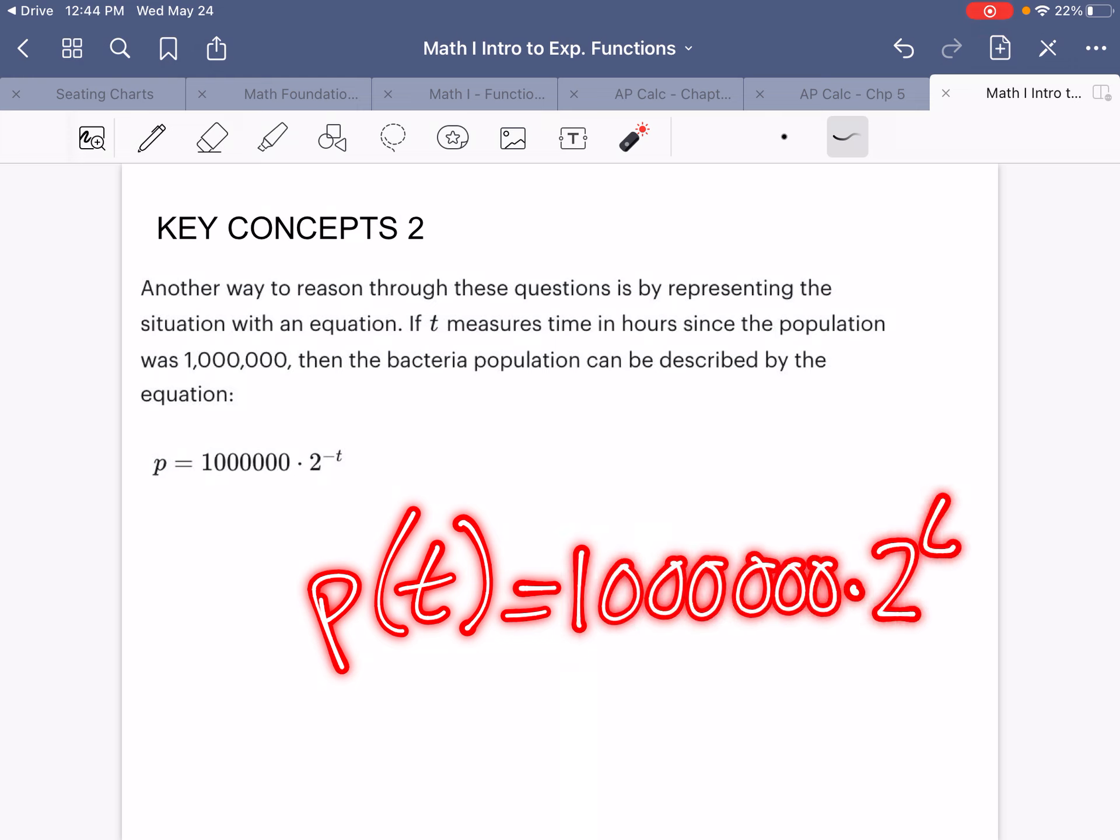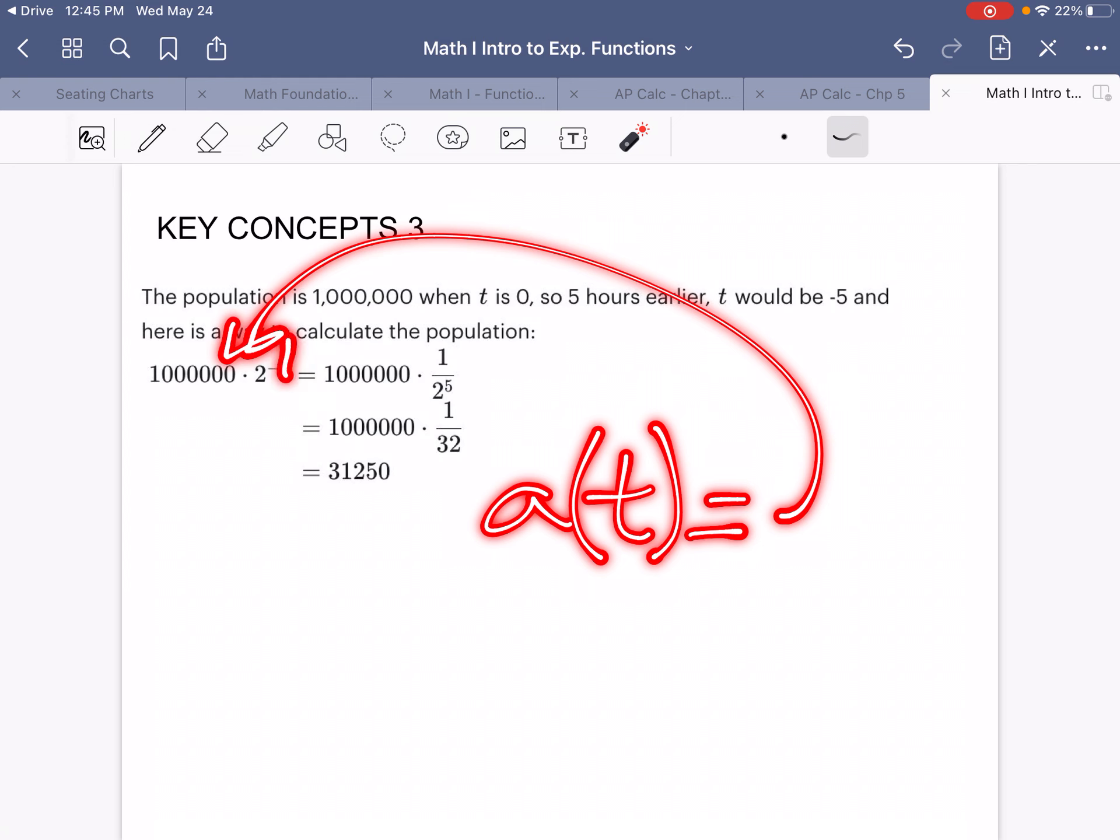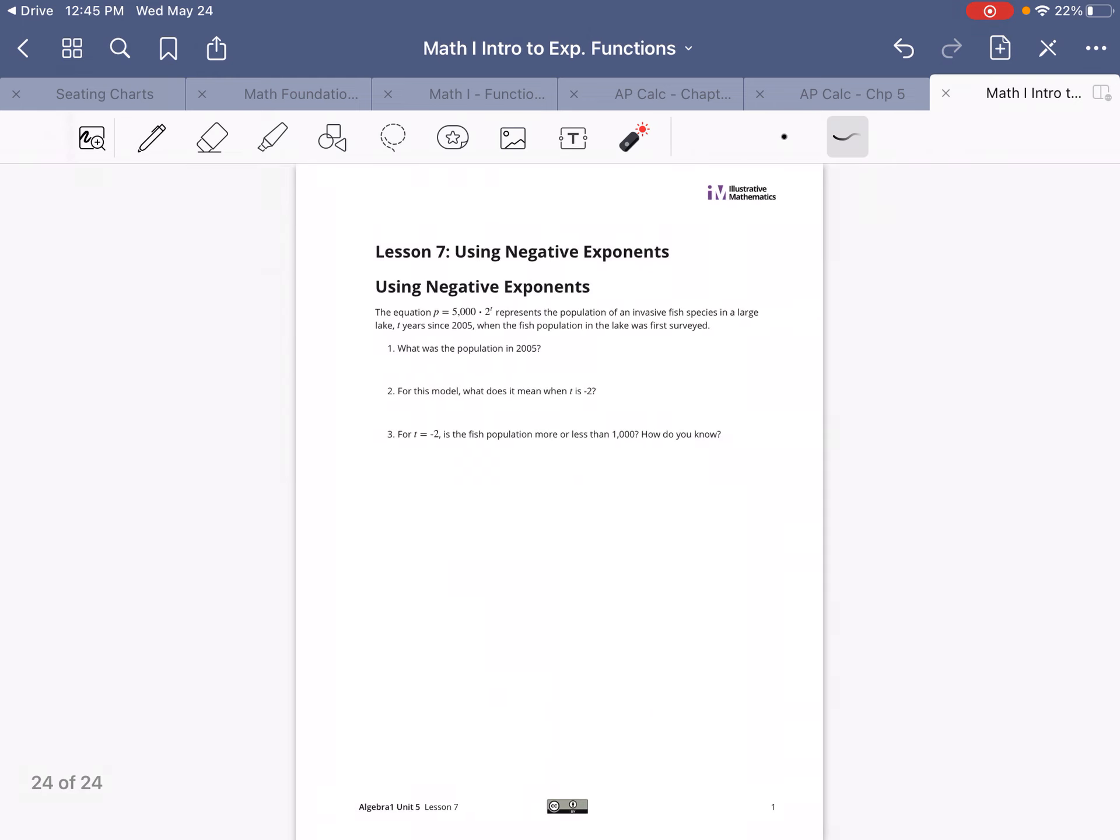Or, I mean, do it on Desmos. Just type in an amount as a function of time equals your equation to the T power, and then on the next line down, you just go A of negative 5. That was a horrible A. Close enough. You get the idea. So let's take a look at this.